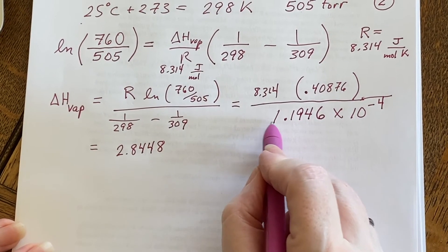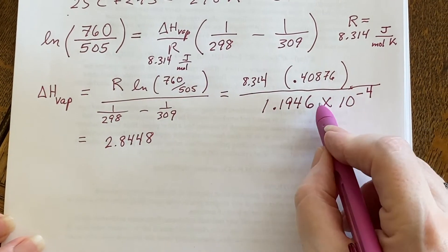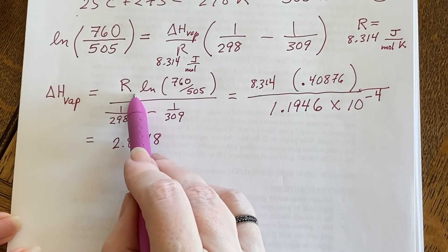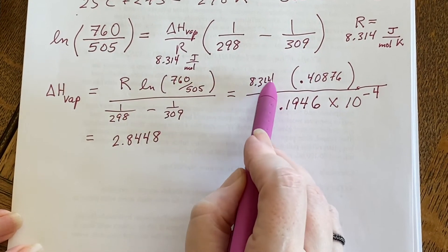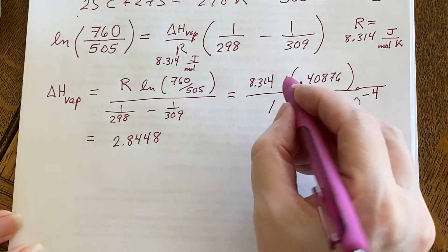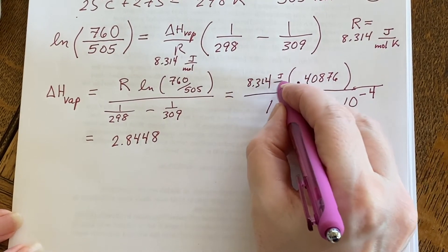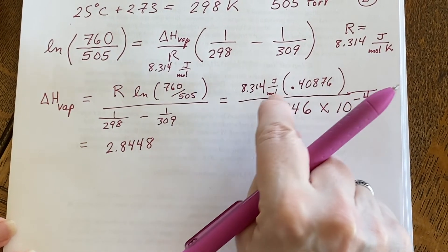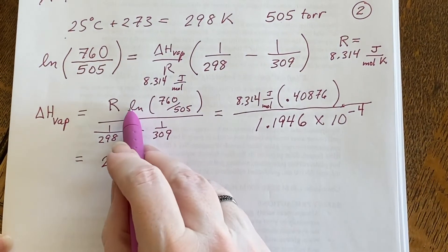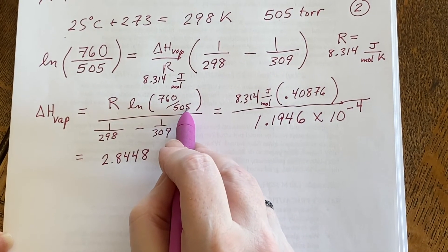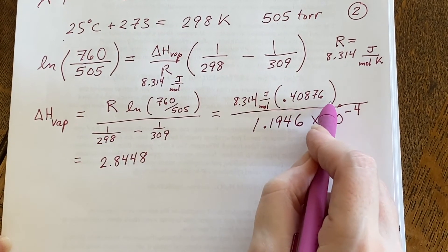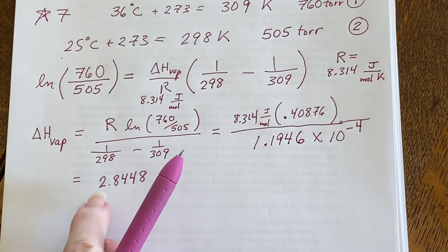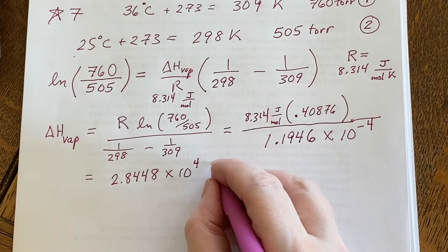So now that we've written down that it's 1.1946 times 10 to the negative 4, we can put in the rest of what we know up here. So instead of the R we'll put the 8.314 which had units joule and mole, and the Kelvin is going to disappear because it cancels with the Kelvin that's here. When we do the logarithm of 760 over 505 we get this number. Now we're just multiply divide and we're going to get this. That's going to be in joules per mole.